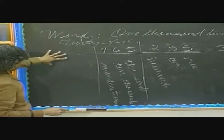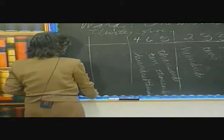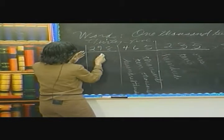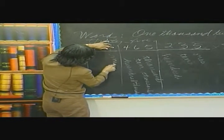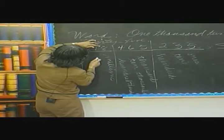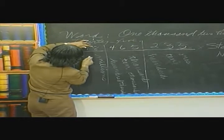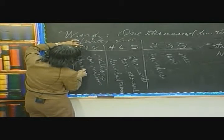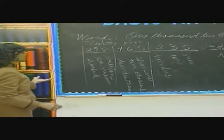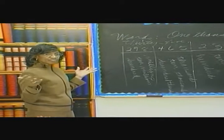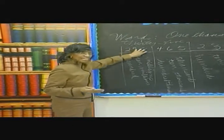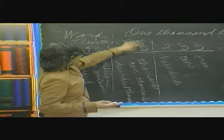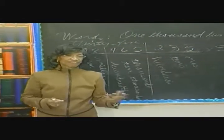The next grouping is millions. It has three components, just as the thousands group: 1,000,000, 10,000,000, and 100,000,000. So if we were to read this number, we would read each grouping just as you would a three-digit number. For example: 298 millions, 465 thousands. Those would be the words for that large number.